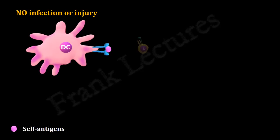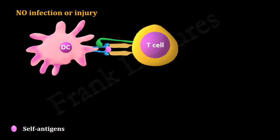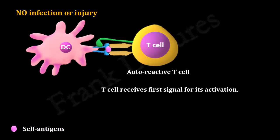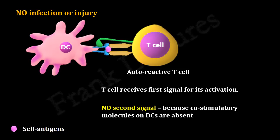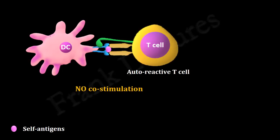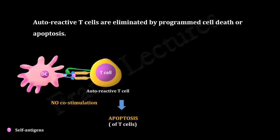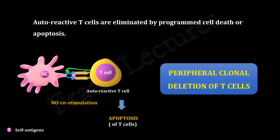Dendritic cells present these self-antigens to naive T cells in the lymph nodes. If an autoreactive T cell whose T cell receptor is specific for the self-antigen displayed by the dendritic cell encounters it, an interaction occurs — meaning the autoreactive T cell receives the first signal for its activation. However, the second signal, co-stimulation, is absent because the dendritic cell does not express co-stimulatory molecules. In the absence of signal 2, the T cell undergoes apoptosis, so no immune response is observed and T cell tolerization is induced. This mechanism, in which autoreactive T lymphocytes are eliminated by programmed cell death, is known as peripheral clonal deletion of T cells.